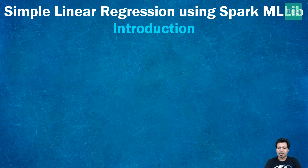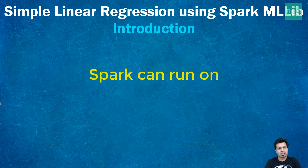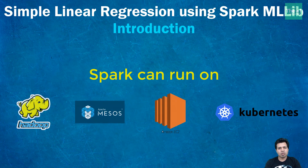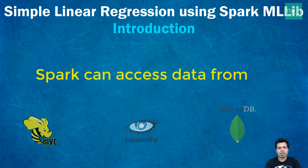Spark can run on Hadoop, Apache Mesos, standalone cluster mode, EC2, or Kubernetes. It can also access data from Apache Hive and NoSQL databases like Cassandra and MongoDB, making it very powerful to build machine learning models utilizing data from varied sources.